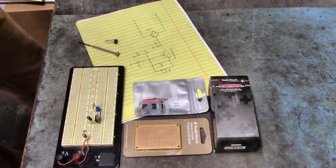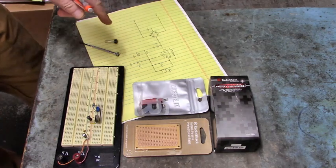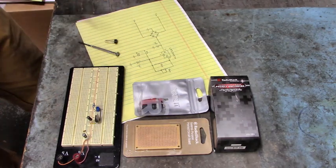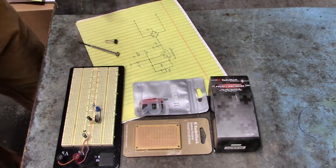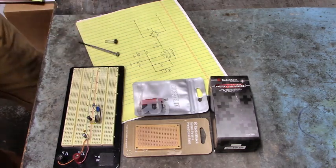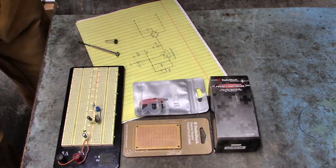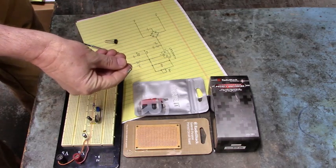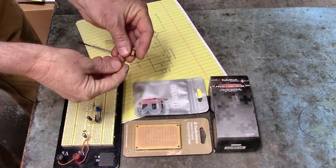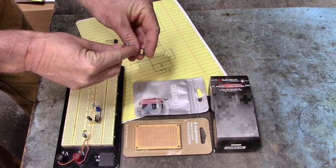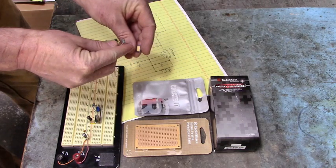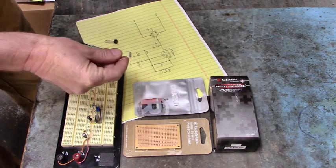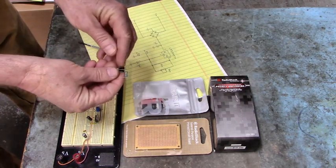Good morning everyone. Right here we got the makings of a constant current source, and the reason I want to build a constant current source is so that I can measure resistances in the milliohms. Right here I got one, this is 0.07 ohms, this one here is 0.24 ohms.